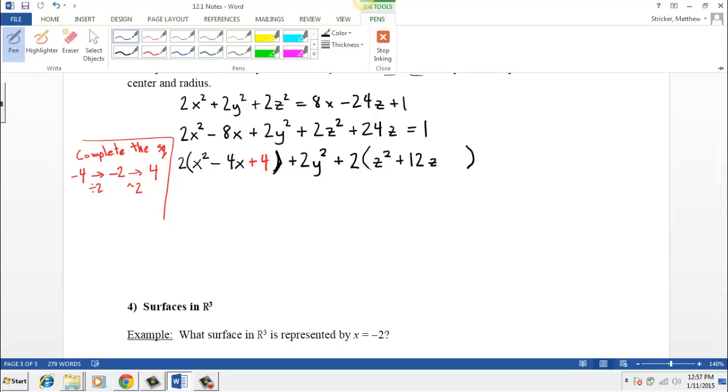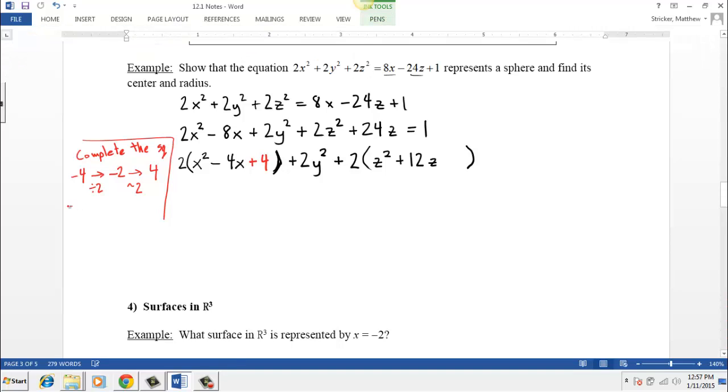And we're going to do the same process we did for the x's. We're going to take our 12, our middle term. And the last one we took our middle term with negative 4. And this one we take our middle term, which is 12. We divide it by 2. It becomes 6. And then we square it. It becomes 36. So I'm going to go ahead and add 36 here.